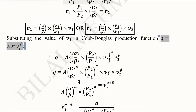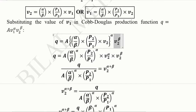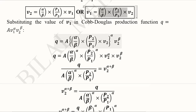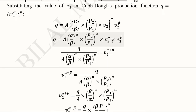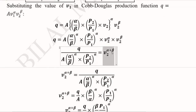This is the production function, and in it we substitute the value of V1. V2 remains the same, and this value of V1 that we just developed is substituted in. The simplification process then begins: V2 raised to the power alpha and V2 raised to the power beta are the two terms we use to find the value of V2. Since the bases are the same, the powers will be added.